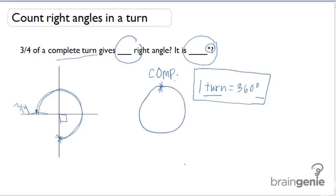This right here is a right angle, this right here is a right angle, and this right here is a right angle. We've gone one, two, three of the four right angles that make up a turn.